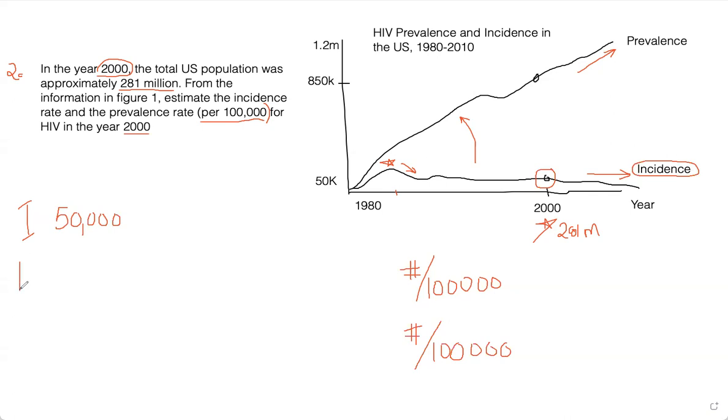In terms of prevalence, I'm going to write down as P, so that's going to be this line right up here. So this spot right here, 850,000 people during the year 2000. That's the total number of cases of HIV within the population. So that's 850,000.